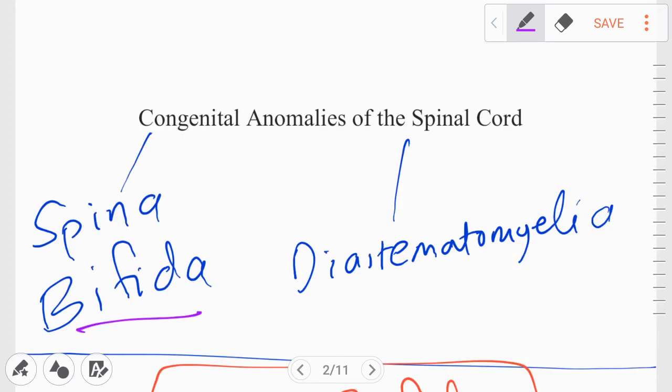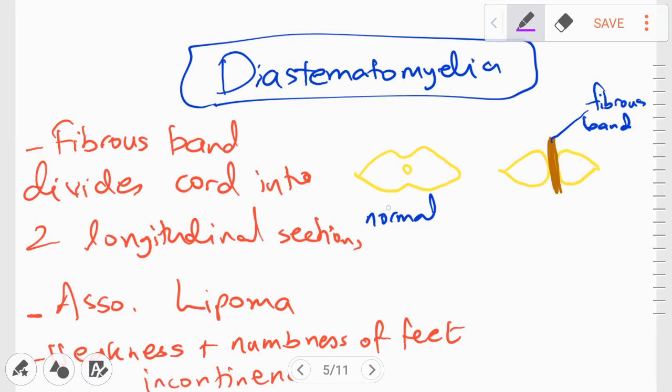So now that we are done with spina bifida, we can then move on to the other disorder, which is called diastematomyelia. So the characteristic feature of diastematomyelia is a bony or fibrous band that divides the spine into two longitudinal sections.